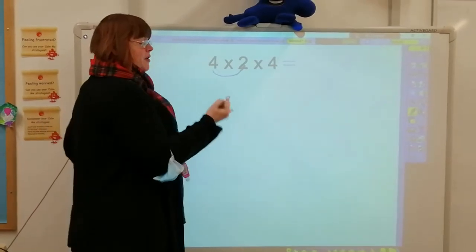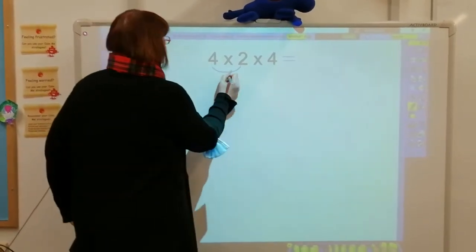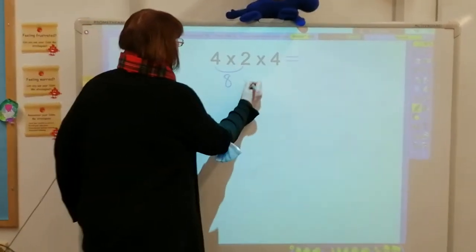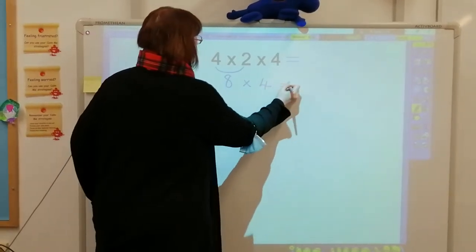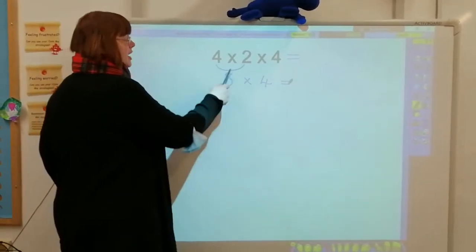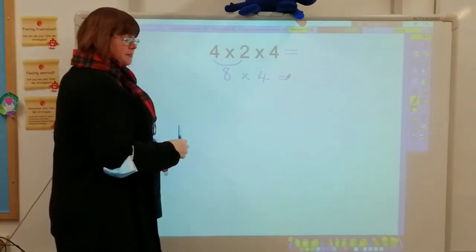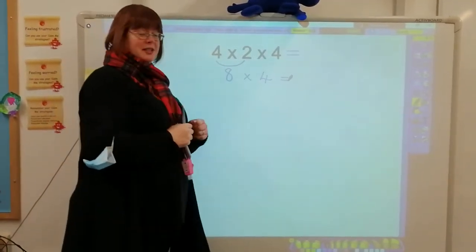which we know is 2, 4, 6, 8. So that becomes 8 times 4. And so you can either count in 8s or count in 4s. I'm going to count in 4s because that's a little bit easier.